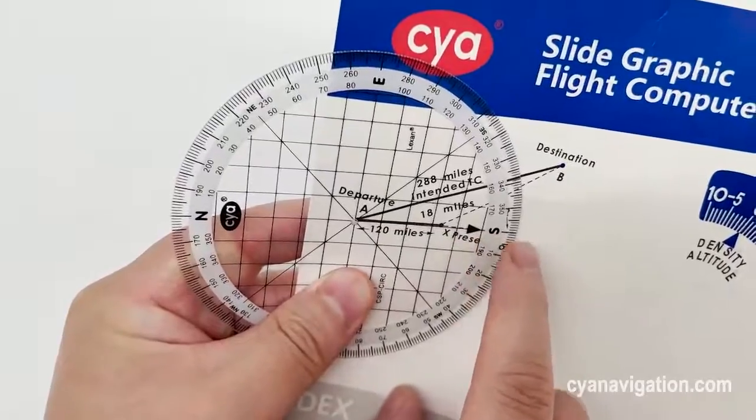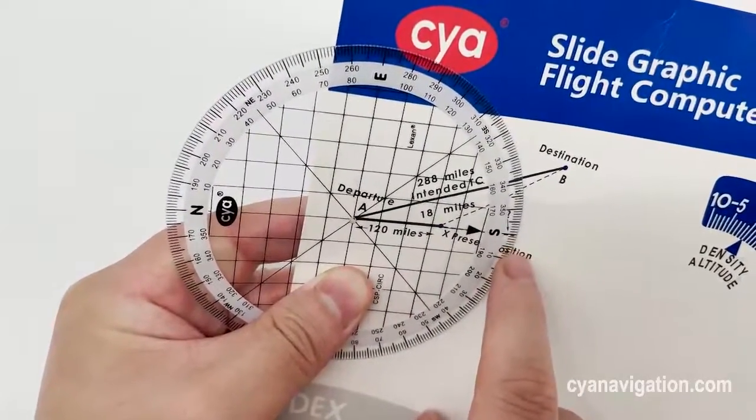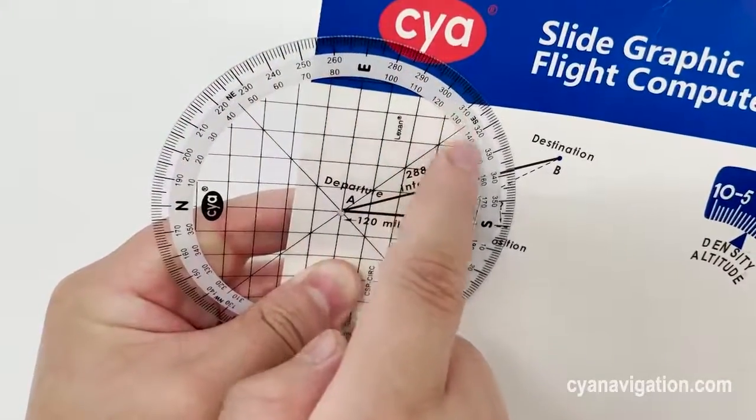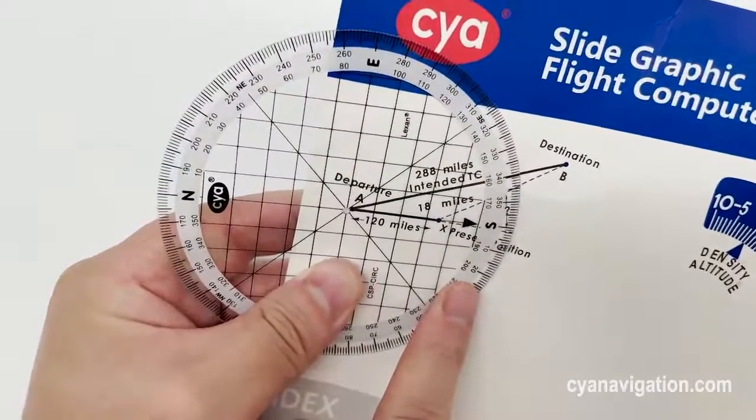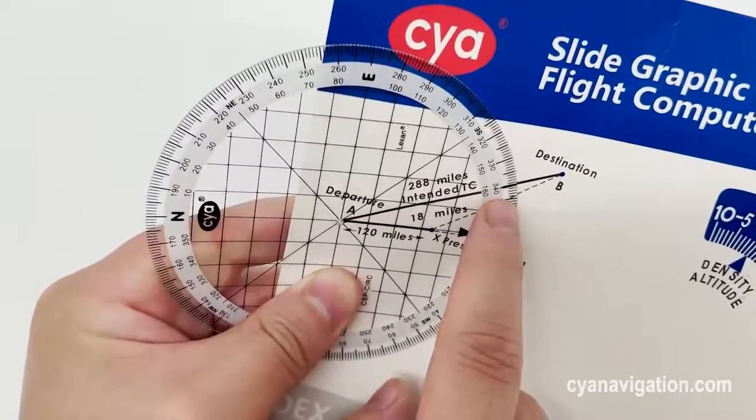To the south, read the outer scales: zero, ten, twenty, around here. We can see it's roughly 340.